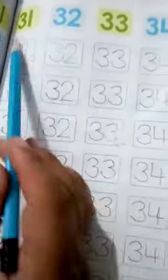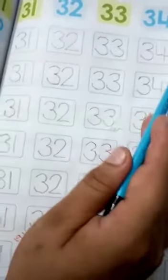So open your page number 4. Trace and write: 31, 32, 33, 34, and 35.